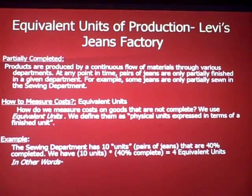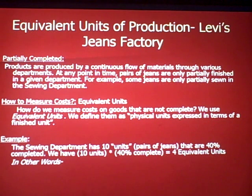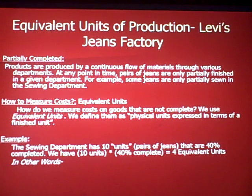I'd like you to think about jeans in the factory that are only partially completed. Products are produced by a continuous flow of materials through various departments, which we've defined in a prior presentation. At any point in time, a pair of jeans are only partially finished in a given department. For example, some jeans are only partially sewn in the sewing department — the department that will be our example in this presentation. So if they're only partially done, how do we measure cost? We use something called Equivalent Units.